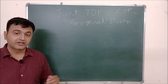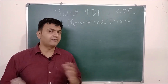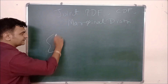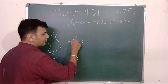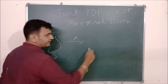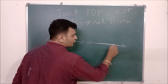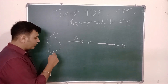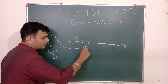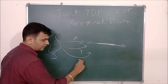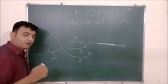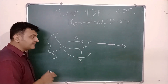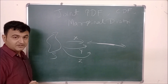Today we are going to concentrate on continuous random variables. When you have a sample space S and a continuous random variable, the output is some line segment or some interval. When on a single sample space you have more than one random variable and want to study their joint probability distribution, the joint PDF comes into picture.